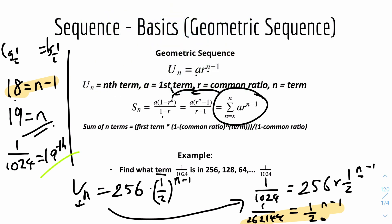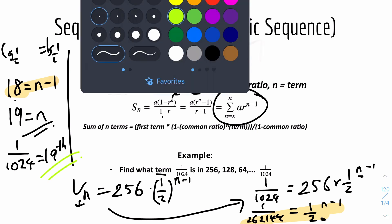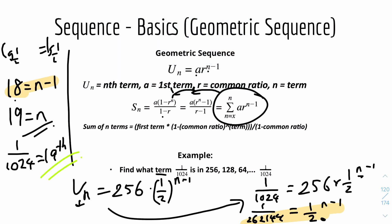To clarify what this means: 256 is the first term, then the second term, third term, and so on — the 19th term in the sequence is the value 1 over 1024.